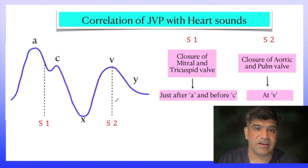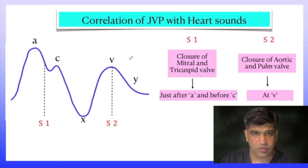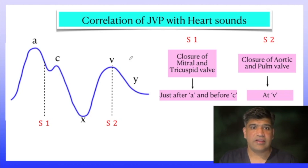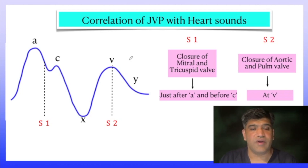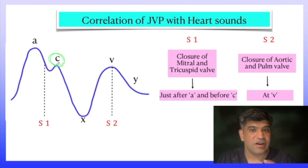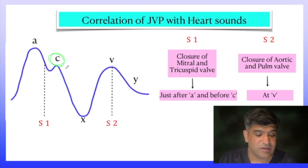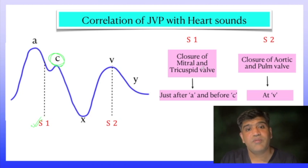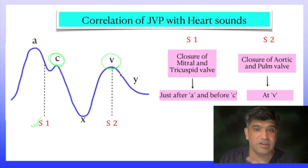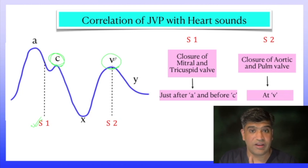Now let us correlate the JVP waveform with heart sounds and the ECG. S1 is caused by closure of the mitral and tricuspid valves; S2 is due to closure of the aortic and pulmonary valves. The C wave is due to the tricuspid valve bulging into the RA, meaning the tricuspid valve has just closed before the C wave — so S1 occurs just before C. The aortic and pulmonary valves close immediately before the tricuspid valve opens, and the tricuspid valve opens at V — so S2 falls just before V.